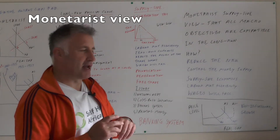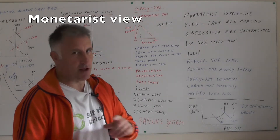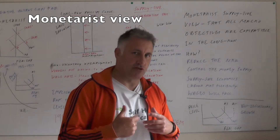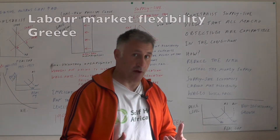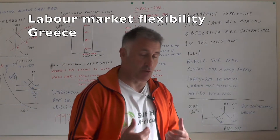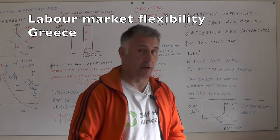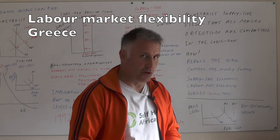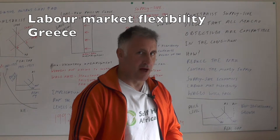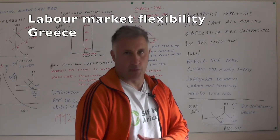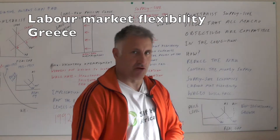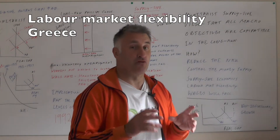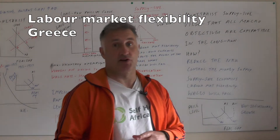Taking the example of Greece: according to the monetarist view, when times were hard wages should have fallen significantly, and because wages would have fallen firms would have employed more people, attracting foreign direct investment to that country. So really the problems of Greece are a supply-side problem.